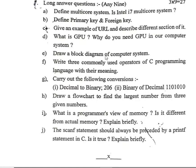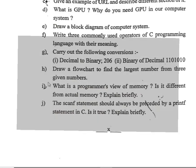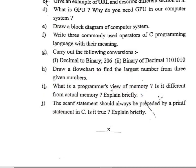Continuing long answer questions: (e) Draw a block diagram of a computer system. (f) Write three commonly used operators of C programming language with their meaning. (g) Carry out the following conversions: decimal to binary — 206; binary to decimal — 11010101 0. (h) Draw a flowchart to find the largest number from three given numbers.